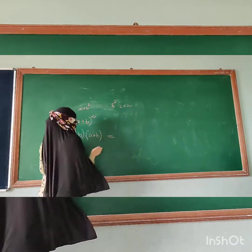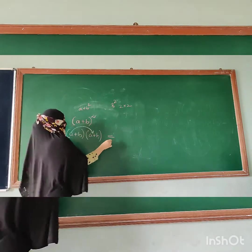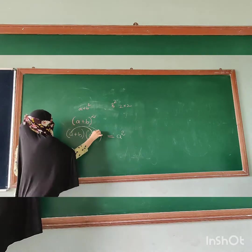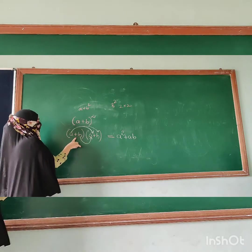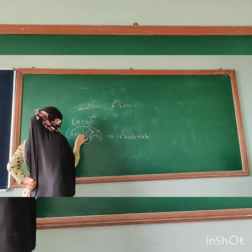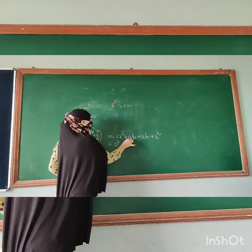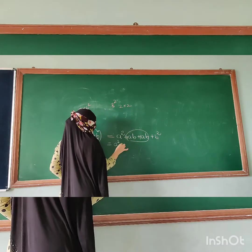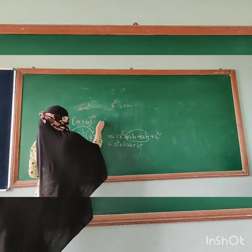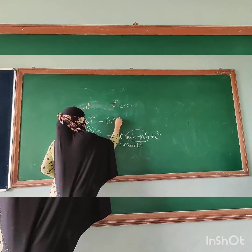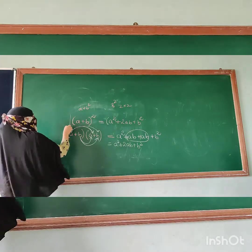Let's solve this: A into A gives A squared, then A into B gives AB, then plus B into A gives plus AB, and B into B gives plus B squared. Now combining: A squared, AB plus AB means 1AB plus 1AB gives 2AB, plus B squared. So this is our identity: A plus B whole squared equals A squared plus 2AB plus B squared. This you have to remember.